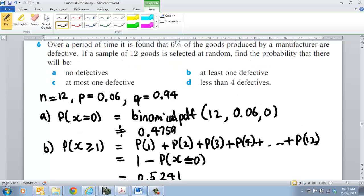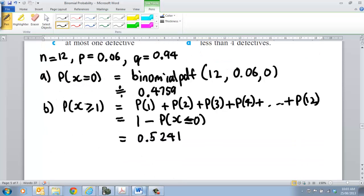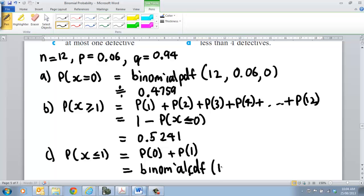So looking at that, part C: at most one defective. So that would be equal to probability at most. So X is less than or equal to one. That's equal to the probability of getting zero plus the probability of getting one defective. Now we can just do that straight on our calculator anyway, binomial CDF. Because remember, we're working left to right. So that would be 12, 0.06, and 1. That will work out our value for it.